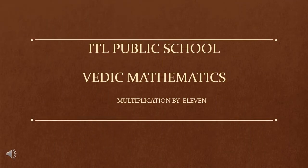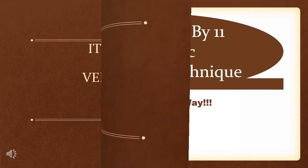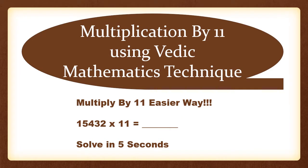Let us learn a new Vedic Mathematics trick. Today's trick is multiplication of 2-digit and 3-digit numbers by 11. Vedic Maths helps us to calculate much faster than the normal procedure, which in turn enhances our academic performance. You can find 15432 multiplied by 11 in just 5 seconds.